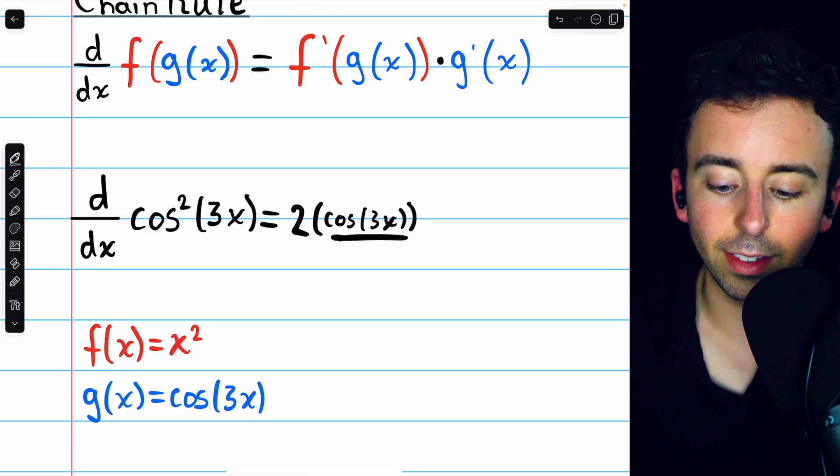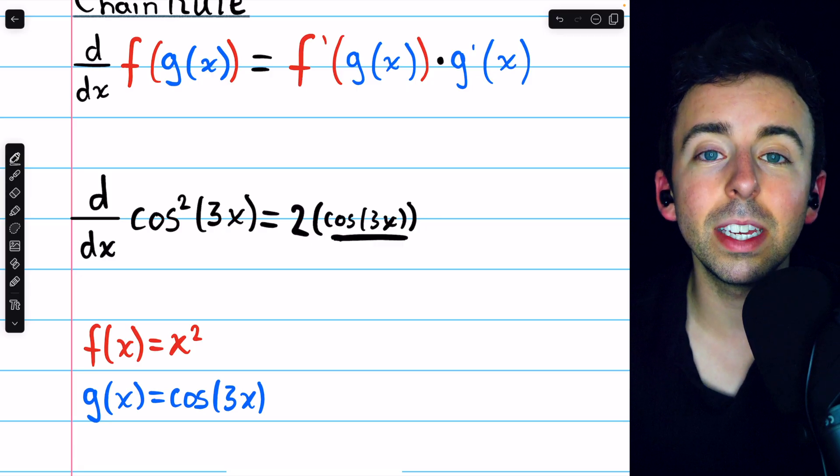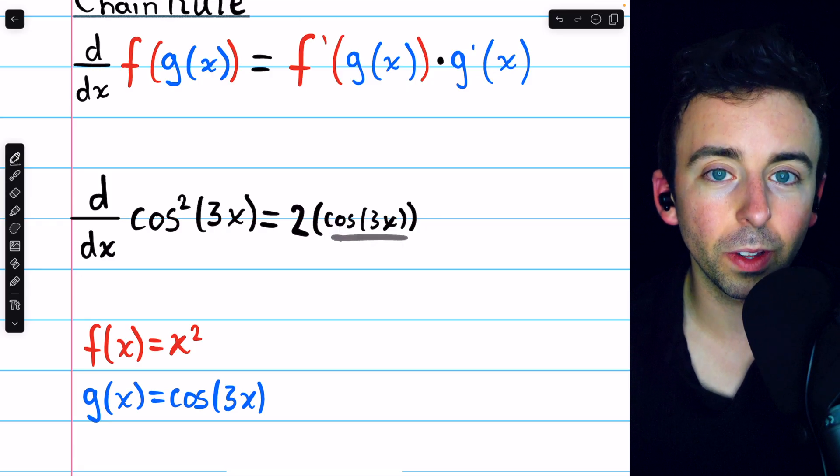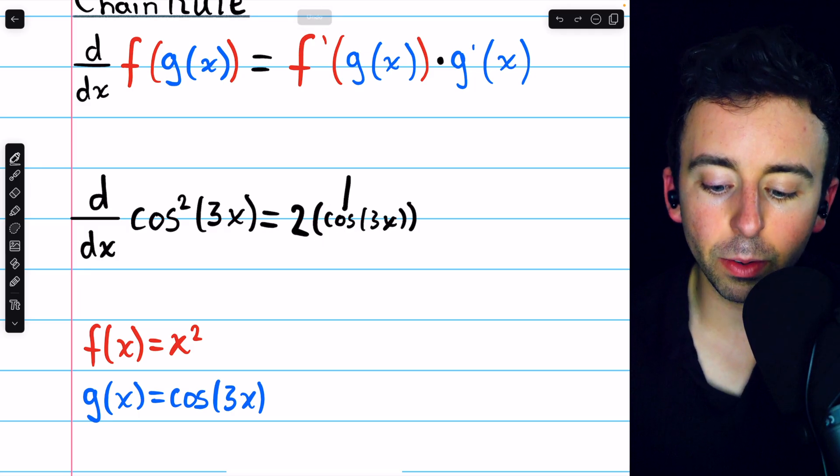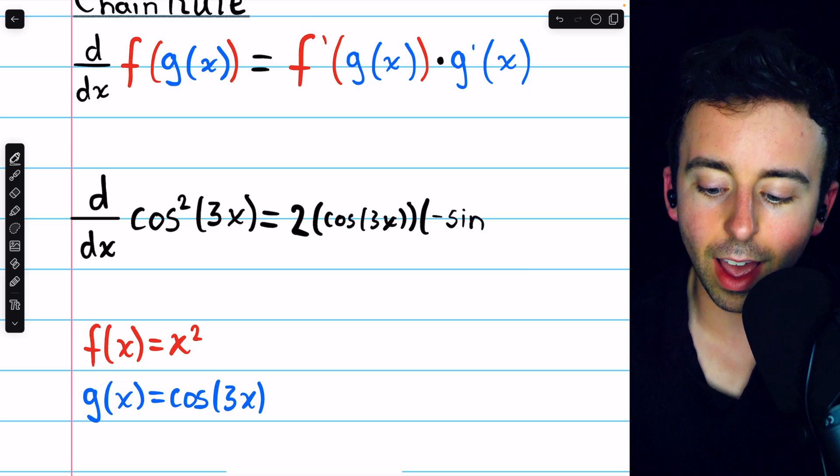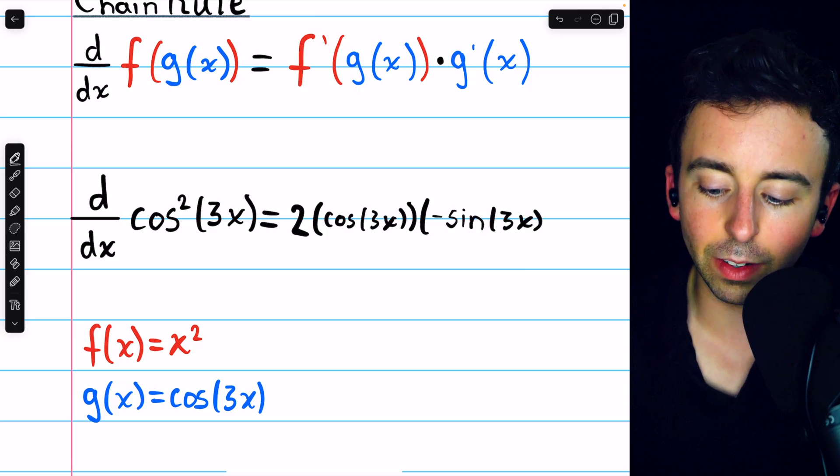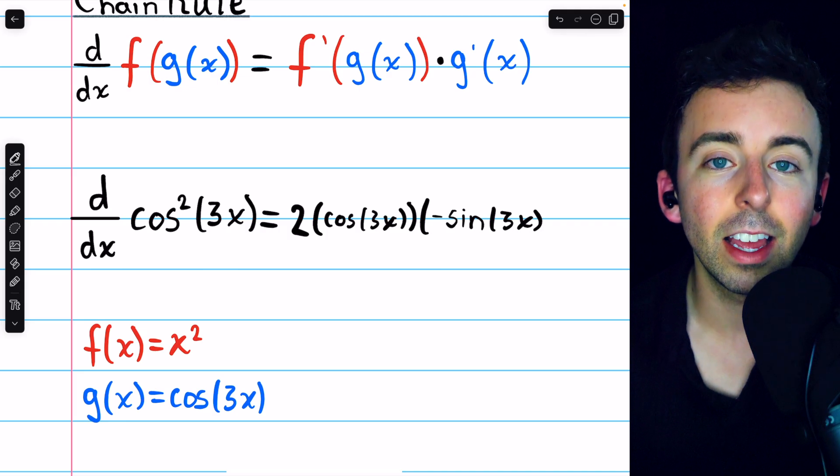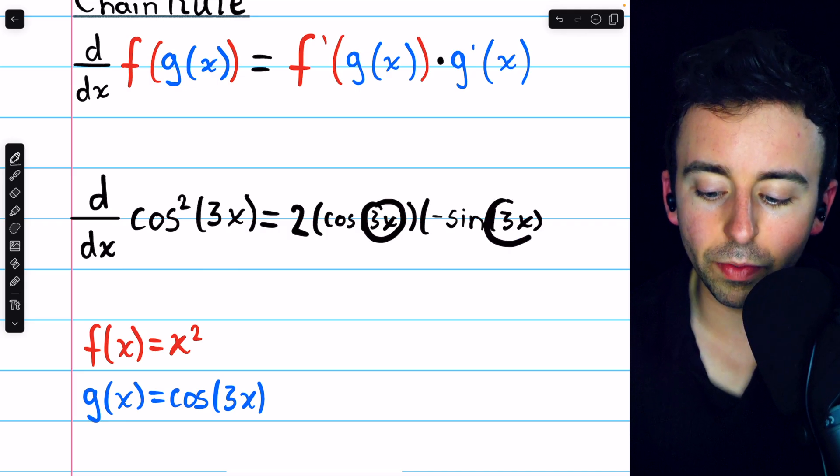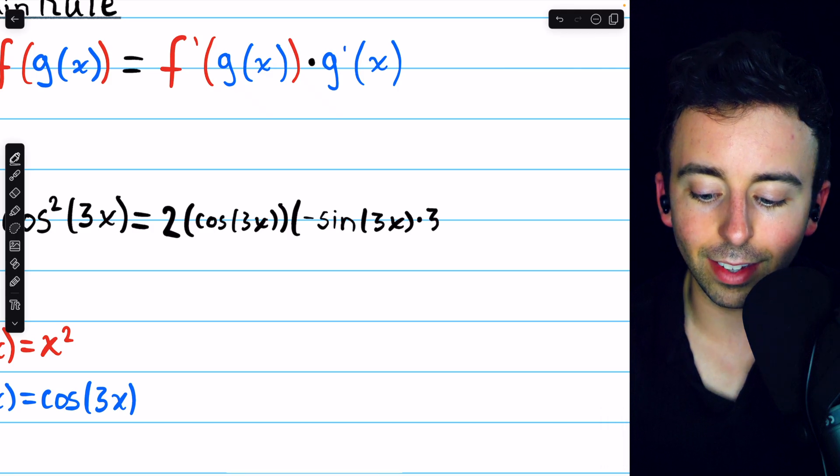the derivative of the inside function. The inside function is cosine of 3x, and to take its derivative we actually have to use the chain rule. For cosine of 3x, the outside function is cosine, and its derivative is negative sine. We want to make sure we don't change the inside function, so it's negative sine of 3x. But then we have to multiply by the derivative of that inside function, 3x, and its derivative is 3.